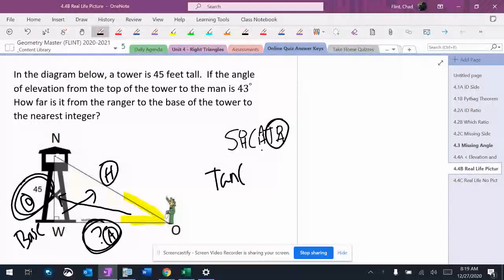So tan, parentheses, equals fraction. The angle's 43. The opposite's 45. Don't know the adjacent. I know the angle, so it goes over 1, and I cross-multiply.